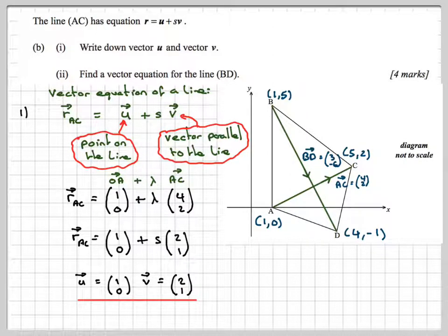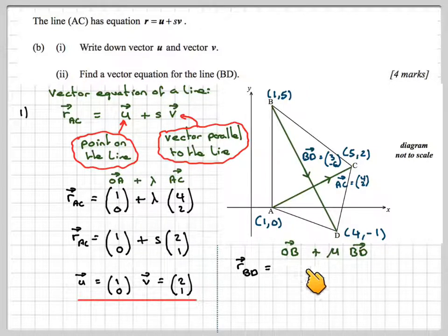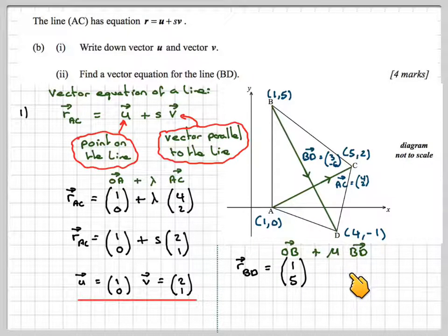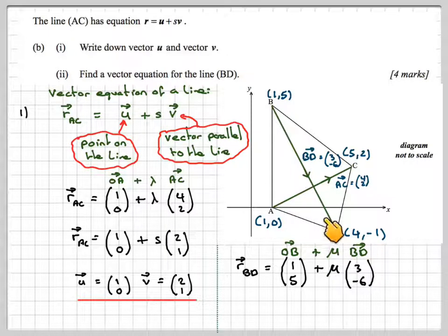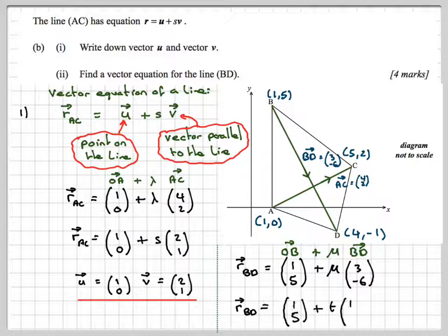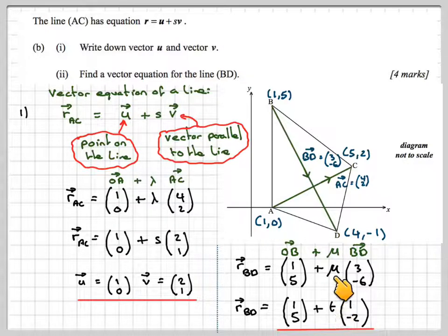Now, in applying that to find the vector equation of BD, RBD will be OB + μBD. So OB is (1,5), and μ plus μBD would be the vector that we found for this one, which is (3,-6). So we can actually simplify (3,-6) to (1,-2). Again, that could have been correct, or that could have been correct. And T is just a parameter. It's different because this is μ times (3,-6). This is a different parameter. T times (1,-2). It doesn't really matter.